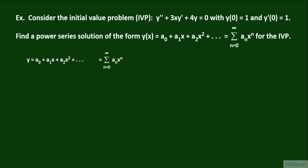The first thing we do is test the initial conditions on the power series solution. Since y of 0 equals 1, if we plug in x equals 0 into the series, the only term remaining is a sub 0, and so a sub 0 is equal to 1.